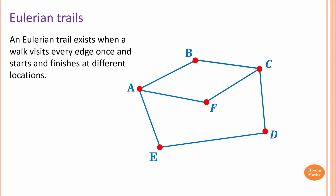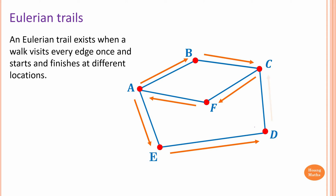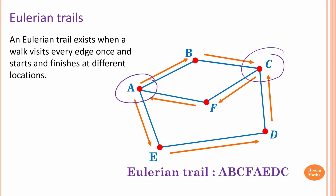Or, I can start from A, and go to C, and C to F, F to A, and then to E, and from E to D, and then from D I stop at C. Noting that I start at A and I finish at C, and I visit every edge once. So this is an Eulerian trail.